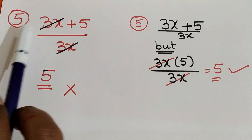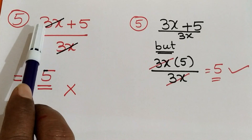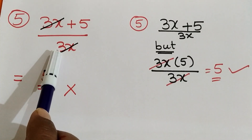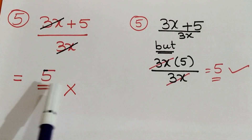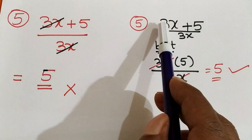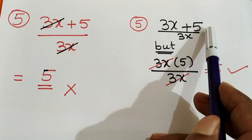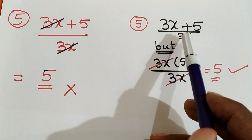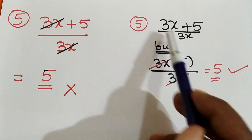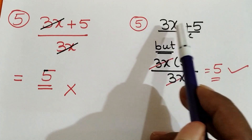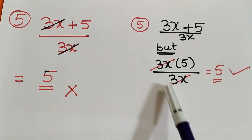Moving on to the next one: (3X plus 5) divided by 3X. Usually, students cancel whatever looks the same in the numerator and denominator and write the remaining term — but this is a wrong procedure. You should not cancel because the numerator is the sum of a variable and a number, whereas the denominator is only a variable. The value changes if you cancel. So don't cancel in addition or subtraction.